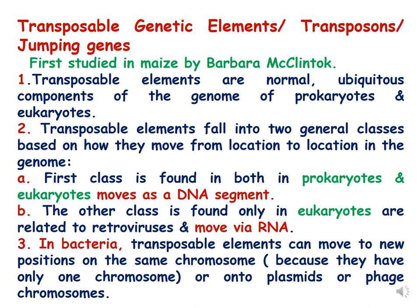What are the features of transposons? Transposable elements are normal ubiquitous components of the genome of prokaryotes and eukaryotes. They fall into two general classes based on how they move from location to location in the genome. The first class is found in both prokaryotes and eukaryotes and they move as DNA segments.